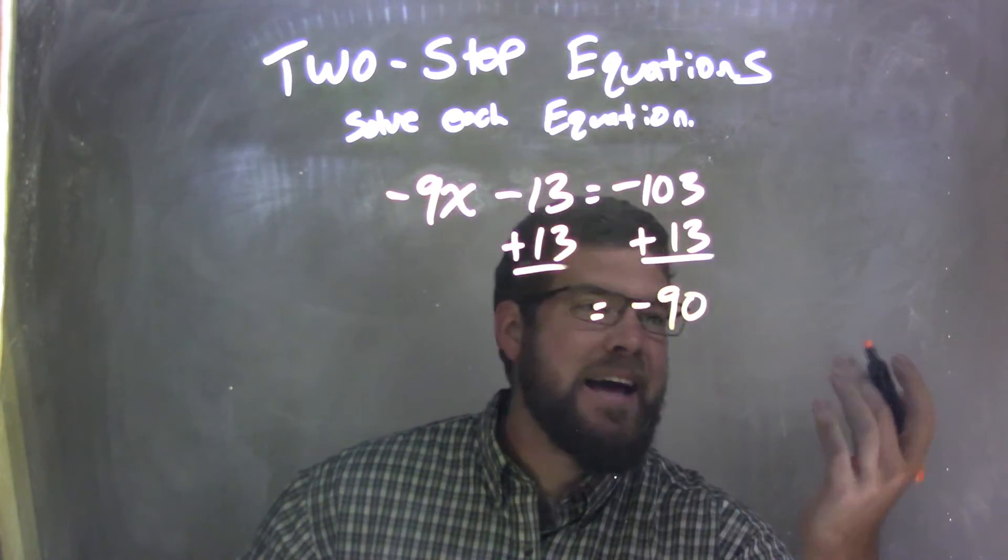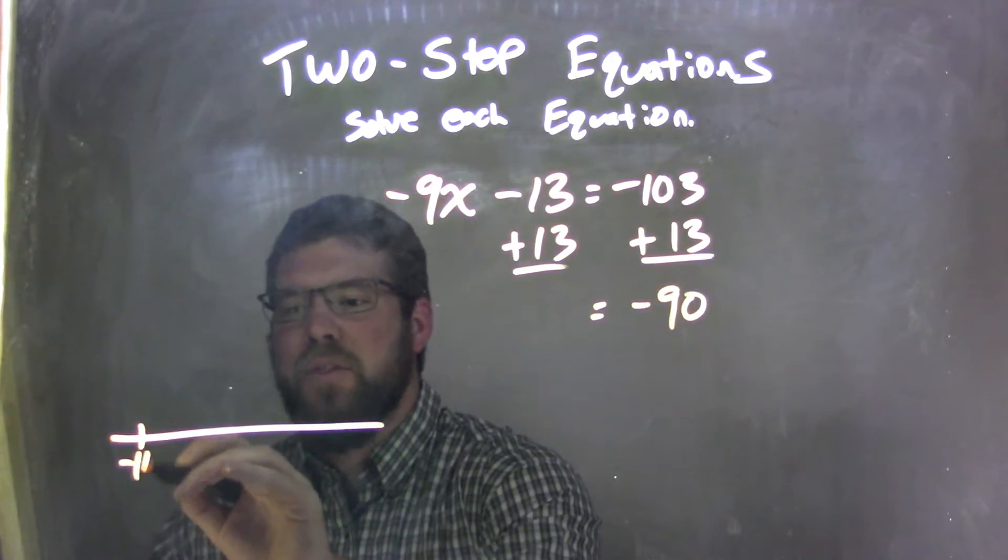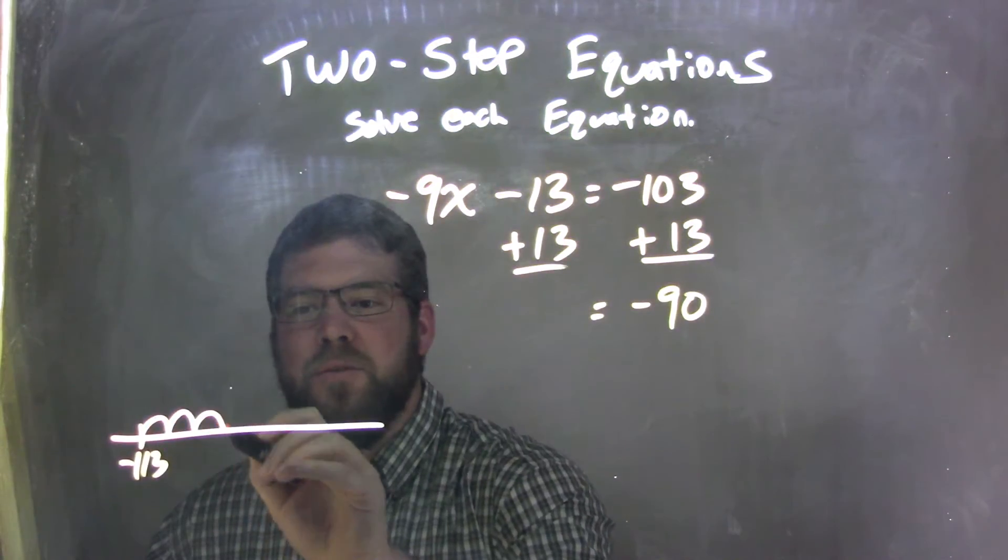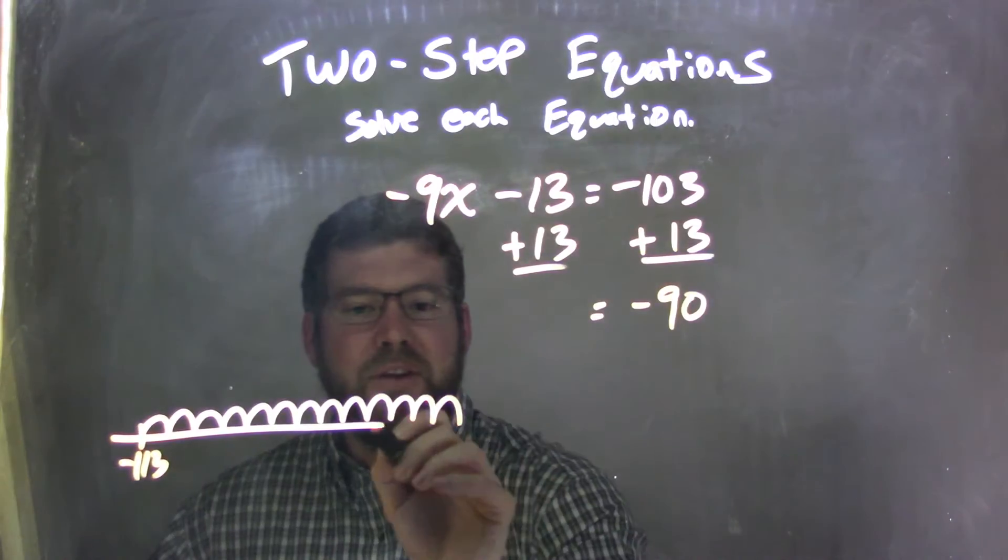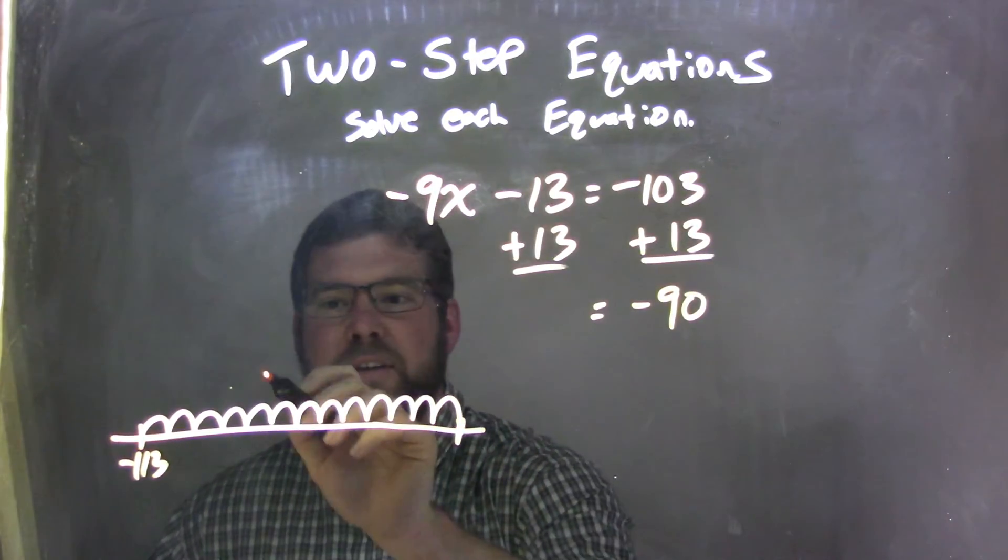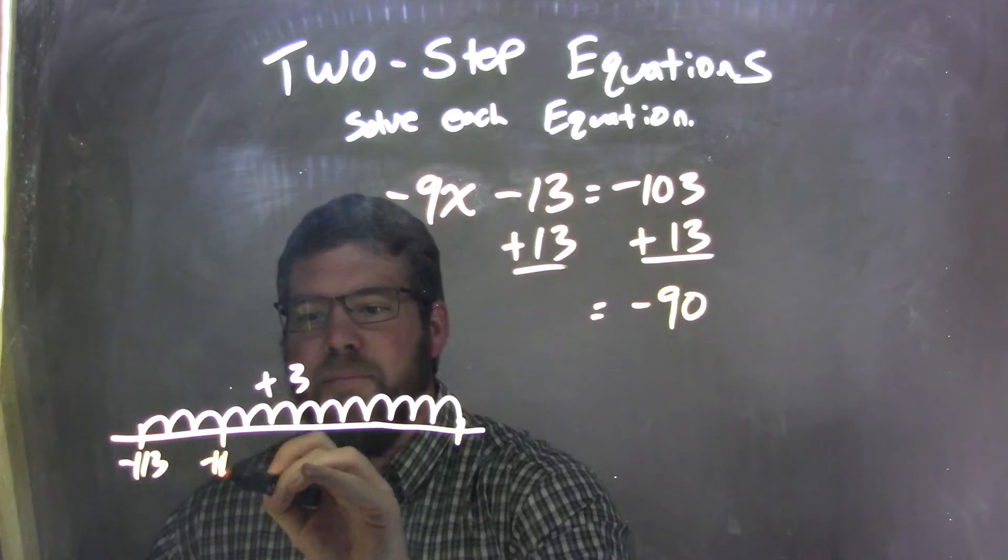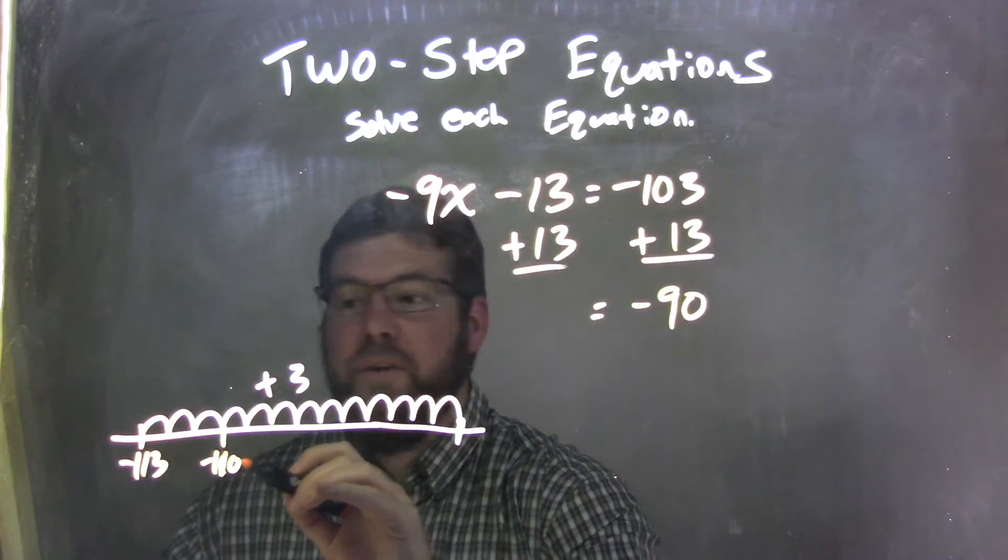Now if you need to see that, you can always draw a little number line here. Say, okay, we're at negative 103 and really count 13 units. You know, 1, 2, 3, 4, 5, 6, 7, 8, 9, 10, 11, 12, 13. Okay, we're adding 13 units. So 1, 2, 3 gives me to negative 110. Okay, 10 more.